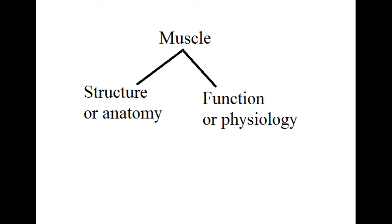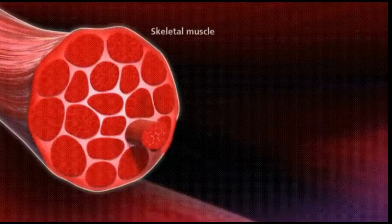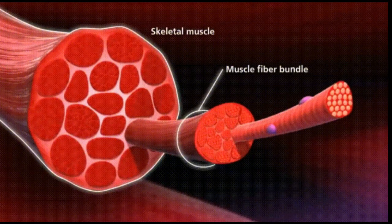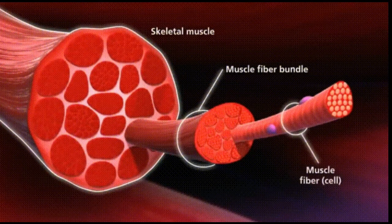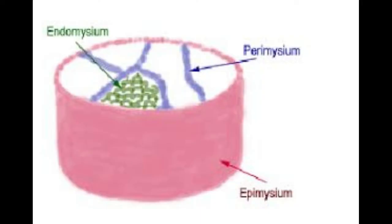Let's look at the structure first. We'll look at muscle structure from the outside in so that it'll be easy for you to understand. As shown in this picture, all muscles of our body have three connective tissue layers on the outside. Let's have a look at each and we'll also see what roles they play when you're contracting a muscle.